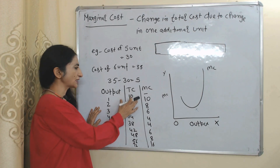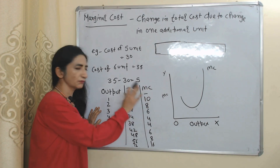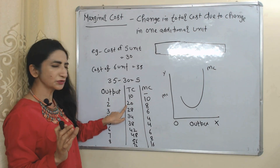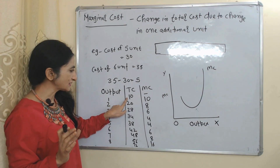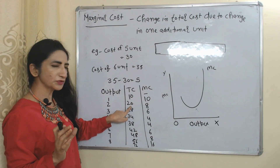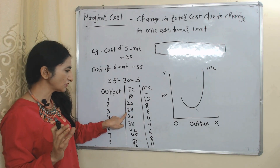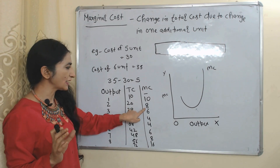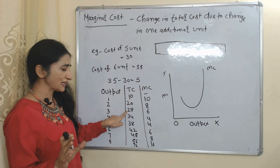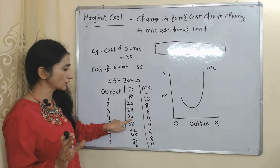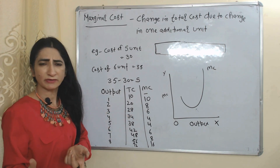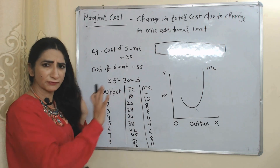In the table: the first column has output, the second has total cost, and the third has marginal cost. Cost of 1 unit is 10, cost of 2 units is 20, so 20 minus 10 equals 10 — this 10 is the marginal cost. Cost of 2 units is 20 and cost of 3 units is 28, so 28 minus 20 equals 8 — marginal cost. Cost of 3 units is 28 and cost of 4 units is 34, so 34 minus 28 equals 6 — marginal cost. You can calculate similarly for other units.